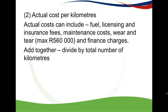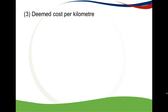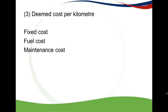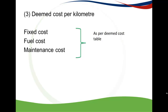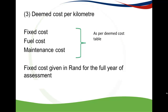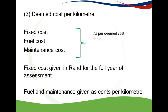The total kilometres used here come from step 1. The next step is to calculate the deemed cost per kilometre using the deemed cost table, which shows a fixed cost, a fuel cost, and a maintenance cost. The fixed cost is a total Rand amount for a full year of assessment over 12 months, while the fuel cost and maintenance cost are already given as cents per kilometre. Since the fixed cost covers all travel for the full year, we adjust it by dividing it by the total number of kilometres.